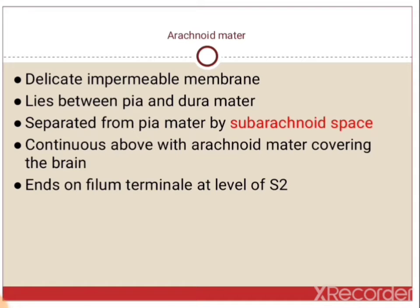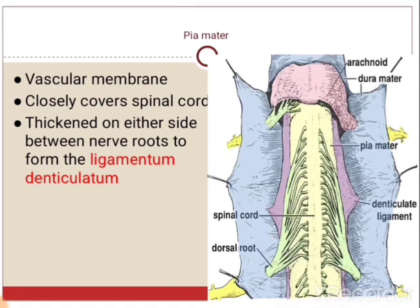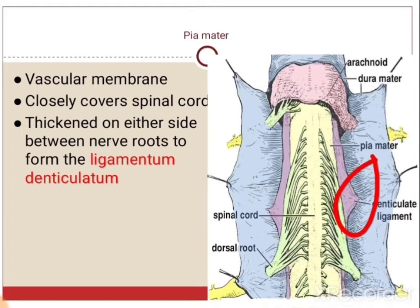The arachnoid mater is a delicate, impermeable membrane lying between the pia mater and dura mater. It is separated from the pia mater by the subarachnoid space and continues above with the arachnoid covering the brain, ending at the level of S2 vertebrae. The pia mater is a vascular membrane very closely adherent to the spinal cord, and it is thickened on either side of the nerve roots to form the ligamentum denticulatum.